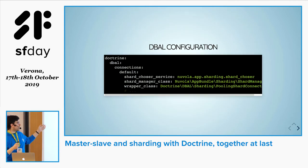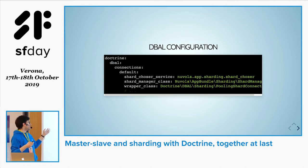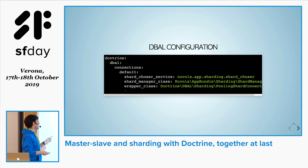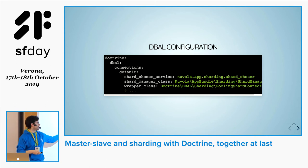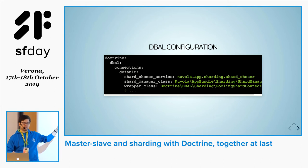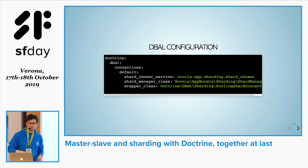This is how you configure sharding in a classical Symfony application: just a couple of services, and then you tell Doctrine to use the wrapper class, the PoolingShardConnection. This comes from Doctrine — you don't need to do anything, it's out of the box.